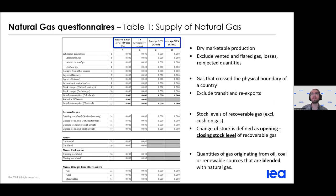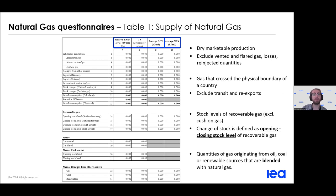Looking at table one of the questionnaire: as a reminder, we only count dry marketable production of gas, which excludes any gas vented or flared, any losses, or re-injected quantities. We collect data in million cubic meters and terajoules and average gross calorific values. Average net calorific values can be estimated as 90% of the gross calorific values. For trade, we only count gas that crosses the physical boundary of the country and we exclude any transit or re-exports.